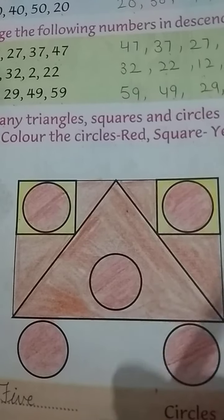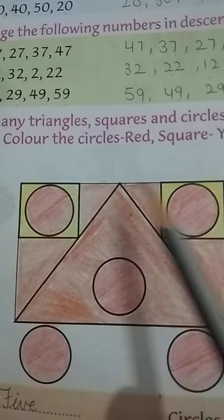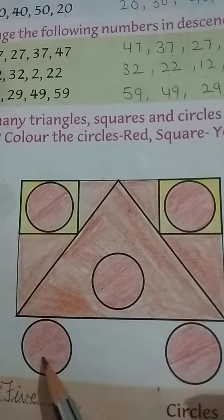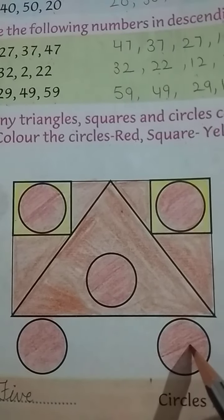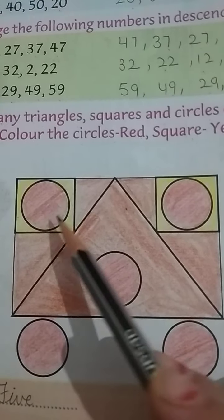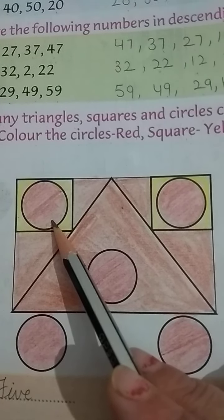Dehkho kitne circles hai? One, two, three, four and five. Kitne circles ho ghe? Five. In me, maynay kaunsa color kiya ho hain? Red. Kaunsa color ye? Red.